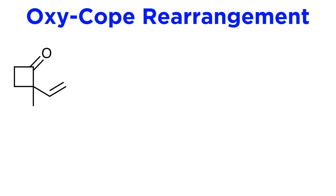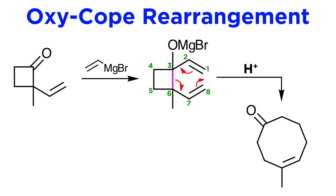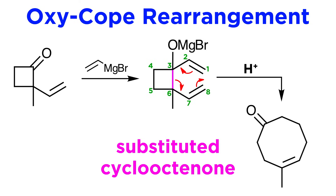To see an example of its application, consider this substituted cyclobutanone. Treatment with a vinyl Grignard reagent will produce this magnesium alkoxide intermediate, which we can quickly see is capable of a 3-3 sigmatropic shift via oxy-Cope rearrangement. Breaking this sigma bond has the ramification of cleaving the four-membered ring and producing an eight-membered ring, and acidic workup will produce the enol, which will tautomerize to give the ketone. And that leaves us with this cyclooctanone — the product of ring expansion through the oxy-Cope rearrangement.